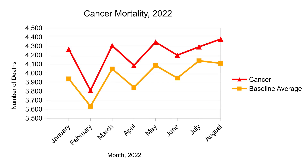Cancer mortality has been somewhat higher than the baseline average for every month of this year, accounting for at least some excess deaths. The report doesn't go into any detail as to why, but it could have to do with delays in treatment during the pandemic, a lack of preventative care, or disruptions to screening services — not to mention Australia's ageing population.